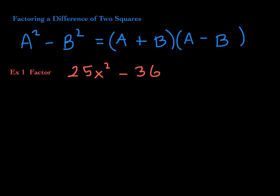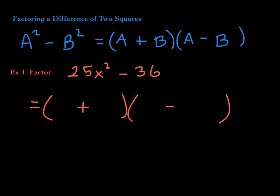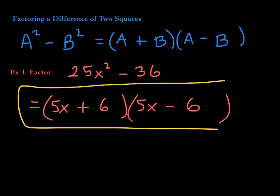Check out this first example. Is it a difference of two squares? First of all, it's a difference — there's a minus sign right in the middle. Is 25x squared a perfect square? Yes, because it's 5x times 5x. Is 36 a perfect square? Yes, because it's 6 times 6. So this is definitely a difference of two squares. It will factor as a product of binomials — one will be plus, the other minus. What do you square to get 25x squared? 5x. What do you square to get 36? 6. So 6 goes there and there.